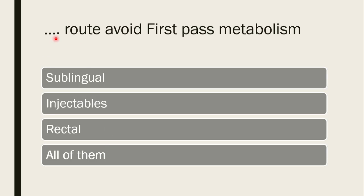Next question: which route avoids first-pass metabolism? Options are sublingual, injectable, rectal, or all of them. The correct answer is all of them. Sublingual drugs go directly into circulation via saliva; injectables reach systemic circulation directly; rectal drugs also bypass hepatic first-pass metabolism. So all these routes avoid first-pass metabolism.